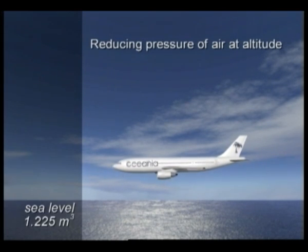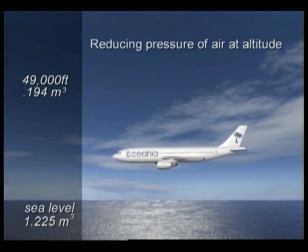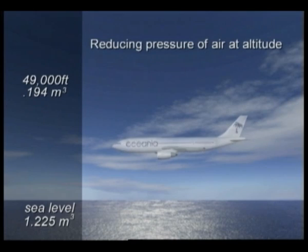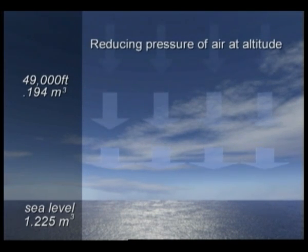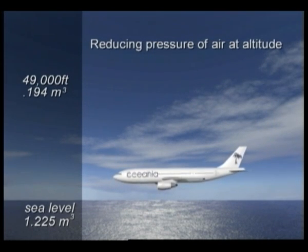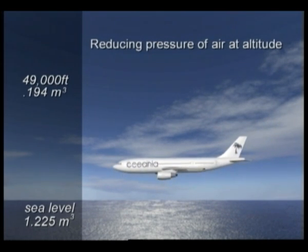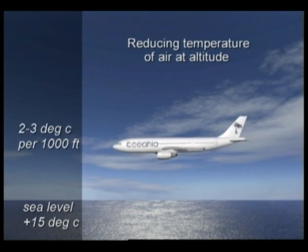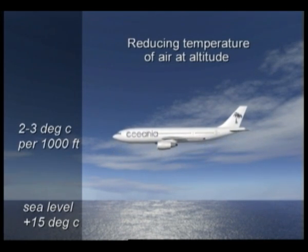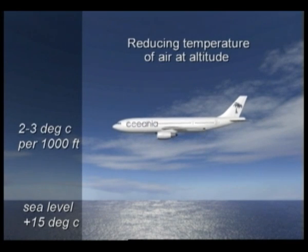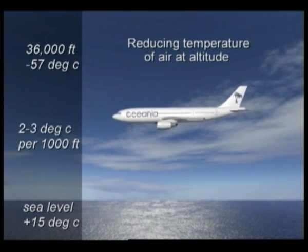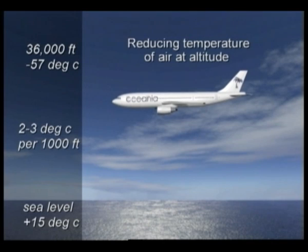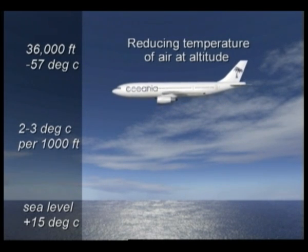Obviously, pressure also decreases with height, which is the reason for the decrease in density, the air close to the Earth's surface being compressed by the weight of all the air above it. Just as the pressure and density decrease with height, so also does the temperature, and at a regular rate — about 2 to 3 degrees centigrade per thousand feet, right up to 36,000 feet, beyond which it stays relatively constant at minus 57 degrees centigrade.